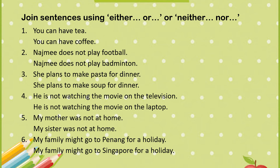Now, let's join sentences using either/or or neither/nor. There are six exercises. Number one: you can have tea / you can have coffee. Number two: Najimi does not play football / Najimi does not play badminton. Number three: she plans to make pasta for dinner / she plans to make soup for dinner. Number four: he is not watching the movie on the television / he is not watching the movie on the laptop. Number five: my mother was not at home / my sister was not at home. Number six: my family might go to Penang for a holiday / my family might go to Singapore for a holiday. From these two sentences each, turn them into one sentence using either/or or neither/nor.